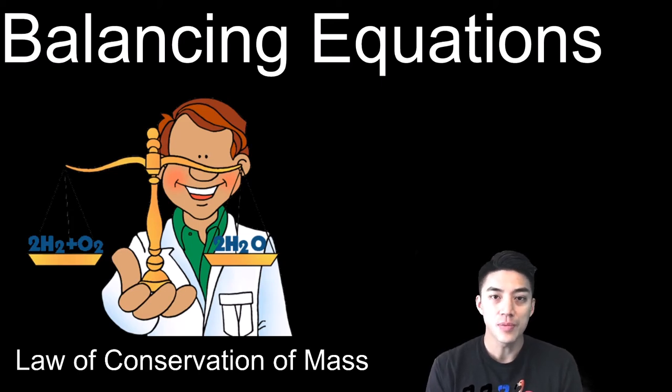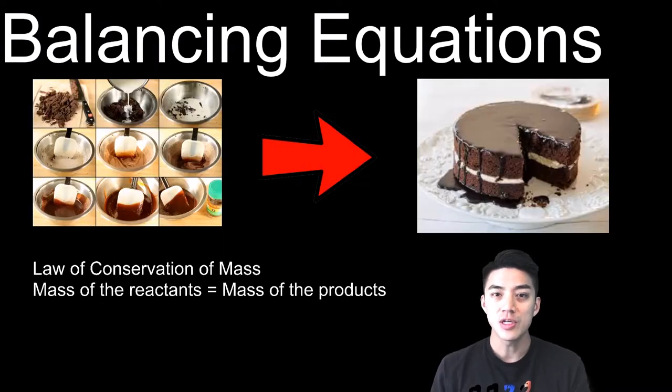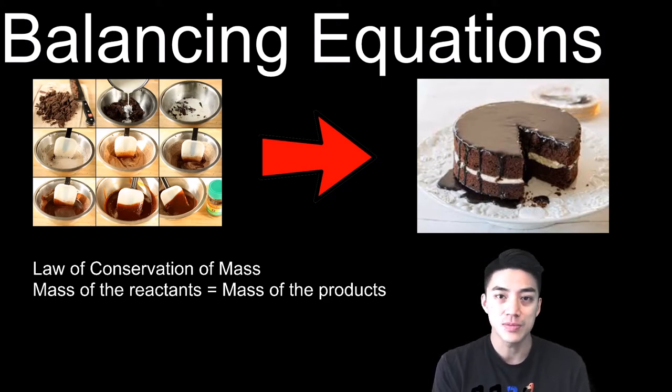We balance equations to uphold the law of conservation of mass. It's one of the fundamental principles in chemistry and in science. This can be understood with something as simple as baking a cake. For example, the mass of your reactants has to be equal to the mass of your products.